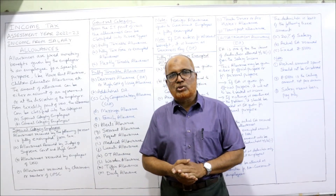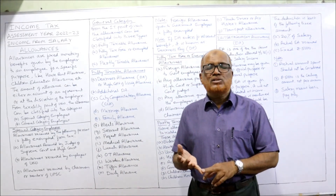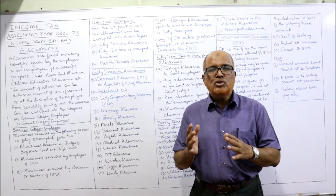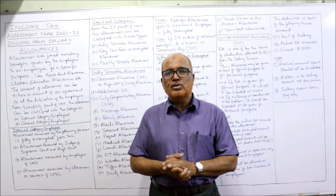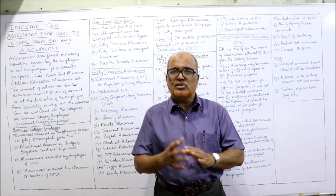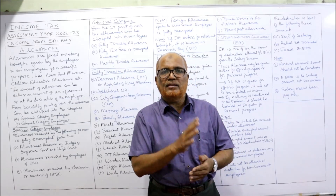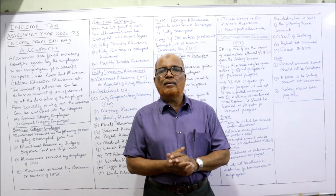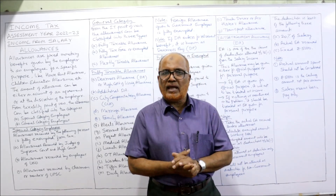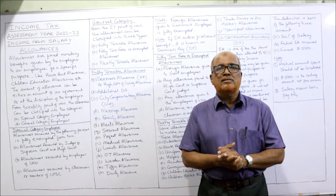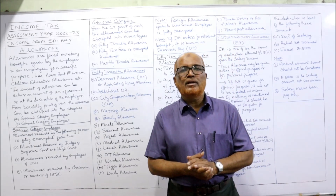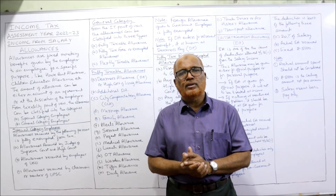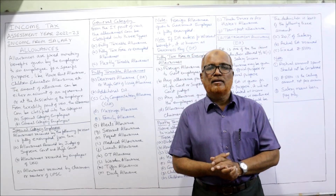In this video I explained the meaning of allowances, the different types of allowances, and the provisions regarding entertainment allowance (EA). In the next video I will explain house rent allowance, children education allowance, and children hostel allowance. If you are satisfied, give a like to the video, share my channel, give your comments, subscribe, and support via Super Thanks.